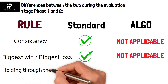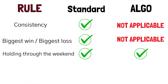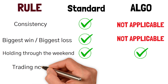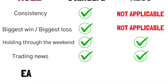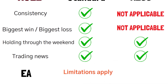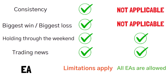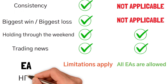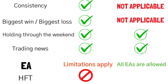Holding over the weekend is allowed in both account types. Trading the news is also allowed in both. For Expert Advisors, there are some limitations in the Standard account during the challenge, whereas in Algo there is no limitation and all EAs are allowed. High frequency trading is not allowed in the Standard account, but in Algo, high frequency trading is allowed during the challenge stage.